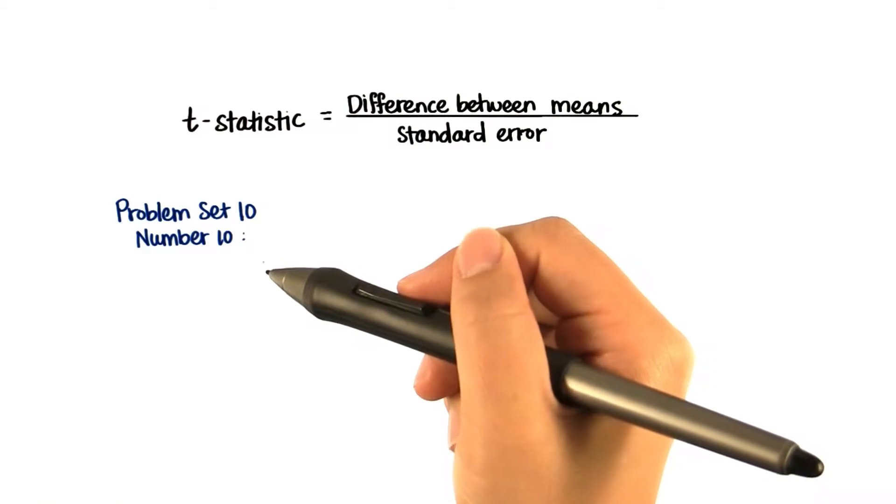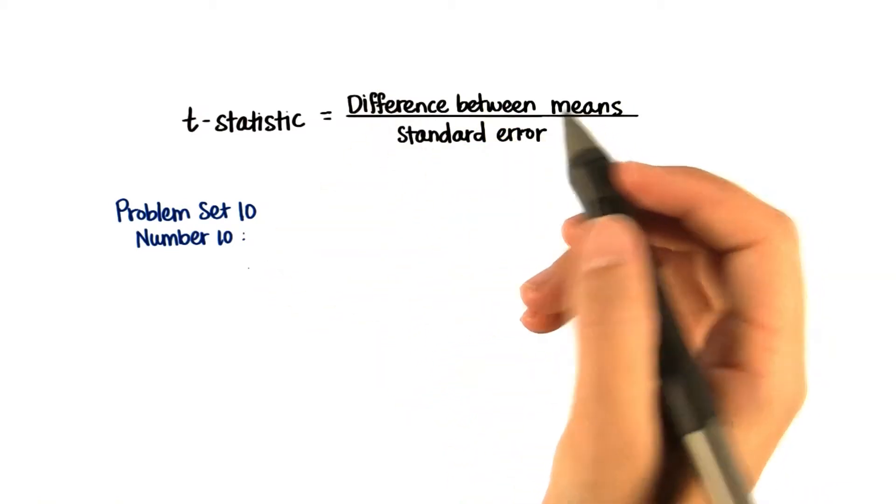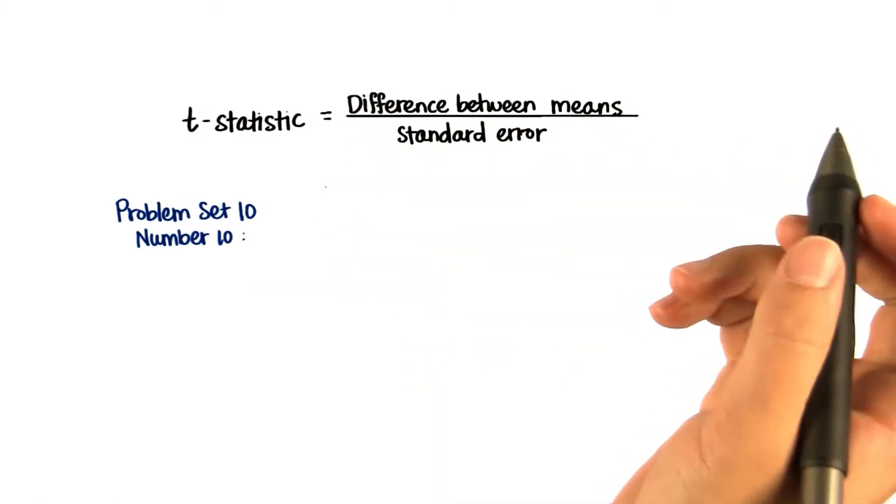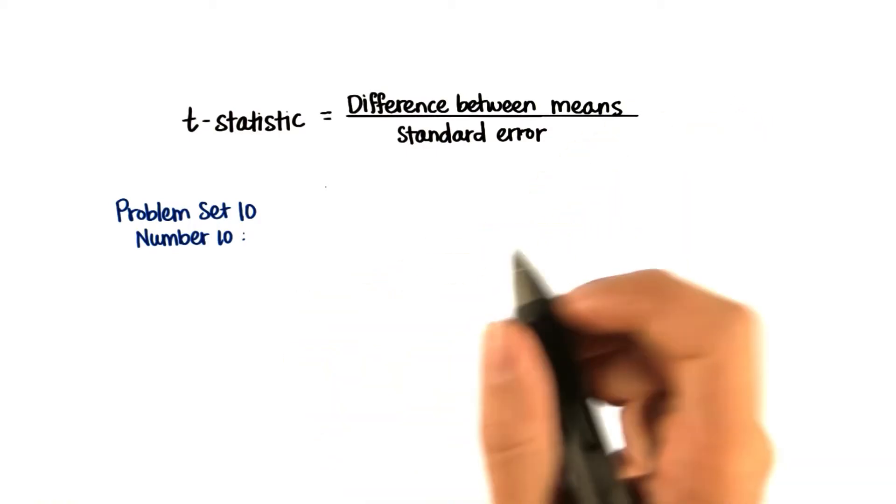In problem set 10 number 10, you saw that if we subtract normally distributed data from other normally distributed data, we get a new data set.